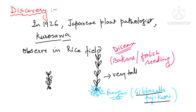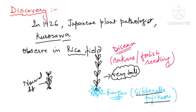To recap: the discovery was done by scientist Kurosawa, a Japanese plant pathologist. He observed in the rice field that some plants were of normal height but some were growing abnormally tall. The plant becoming very tall was found to be affected by the fungus Gibberella fujicuroi, and this disease was named Bakanae disease — foolish seedling of rice.